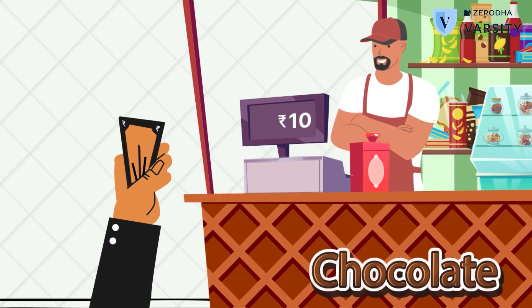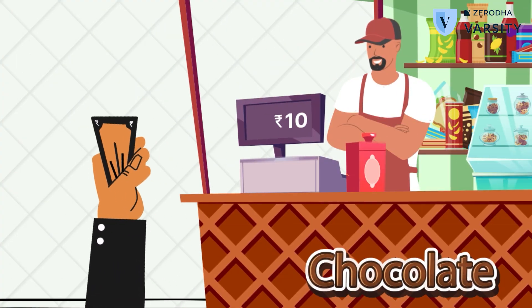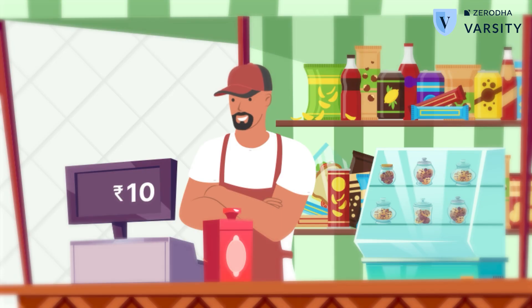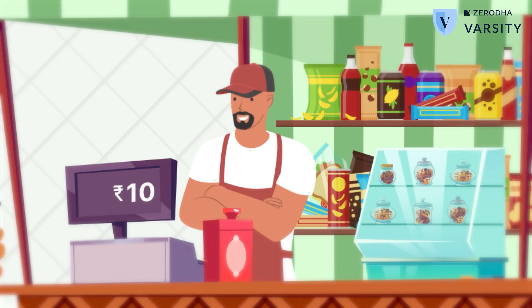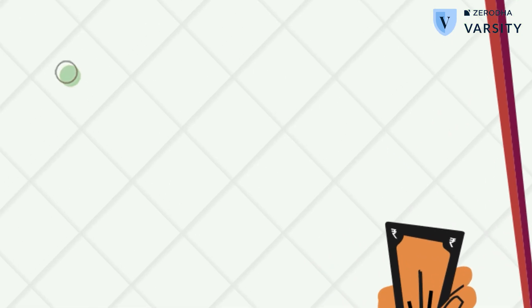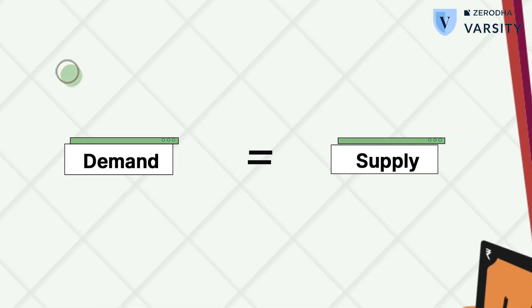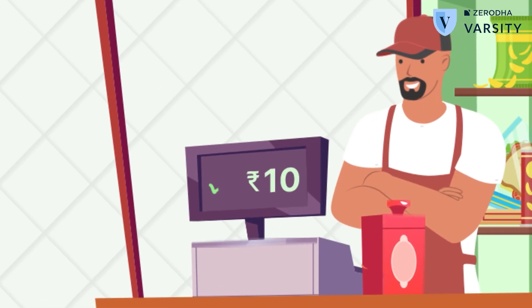Imagine there's a person who wants to buy a box of chocolate and there's another person willing to sell this box of chocolate. All else equal, with no external forces acting on this transaction, the demand matches the supply and therefore this transaction will go through. Here, there is no incentive for the seller to increase the price of the box of chocolates.